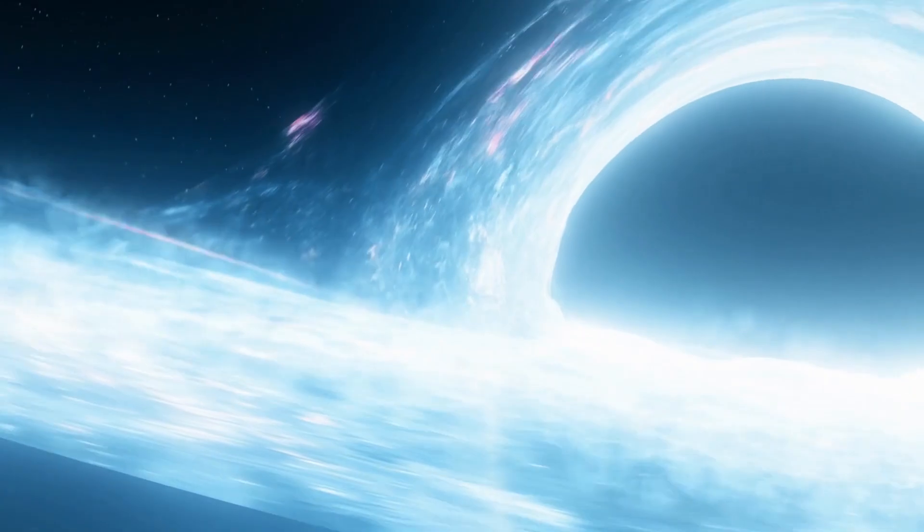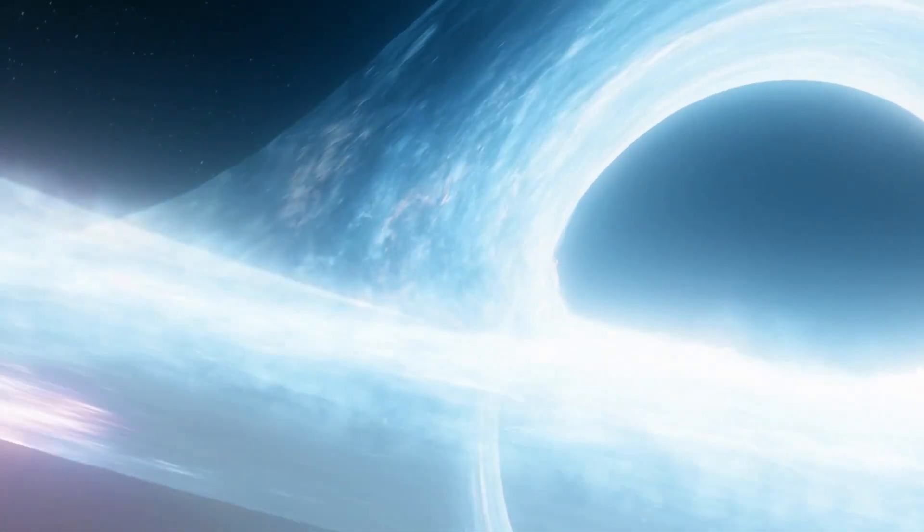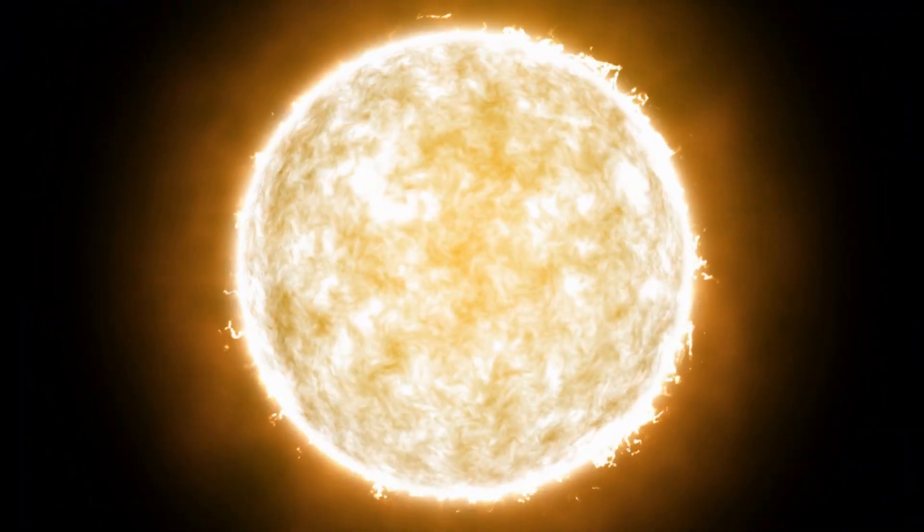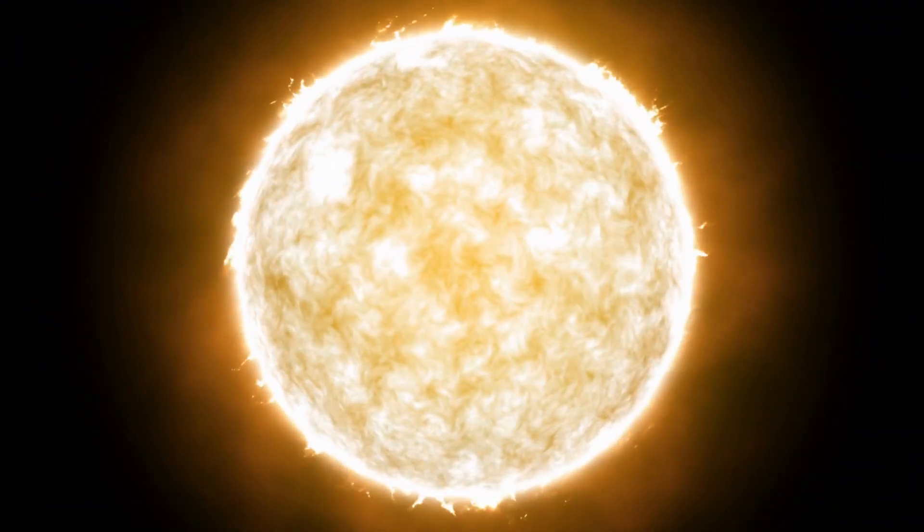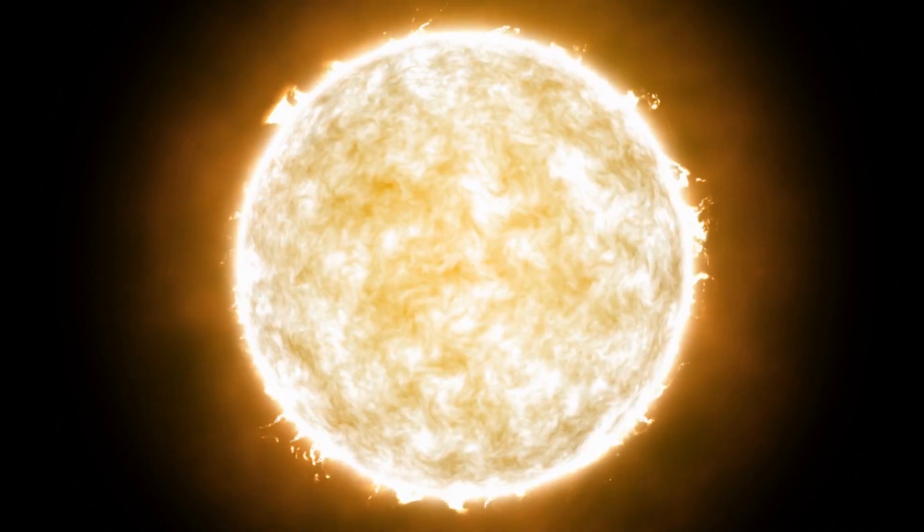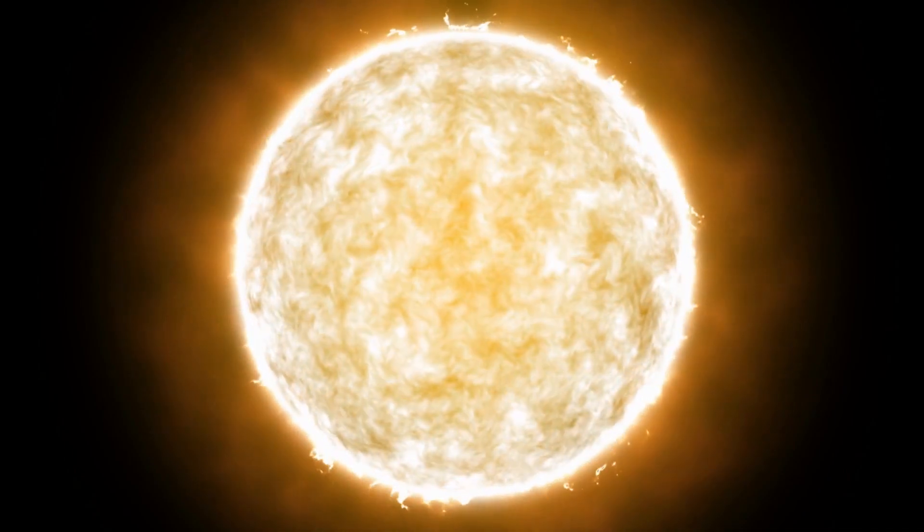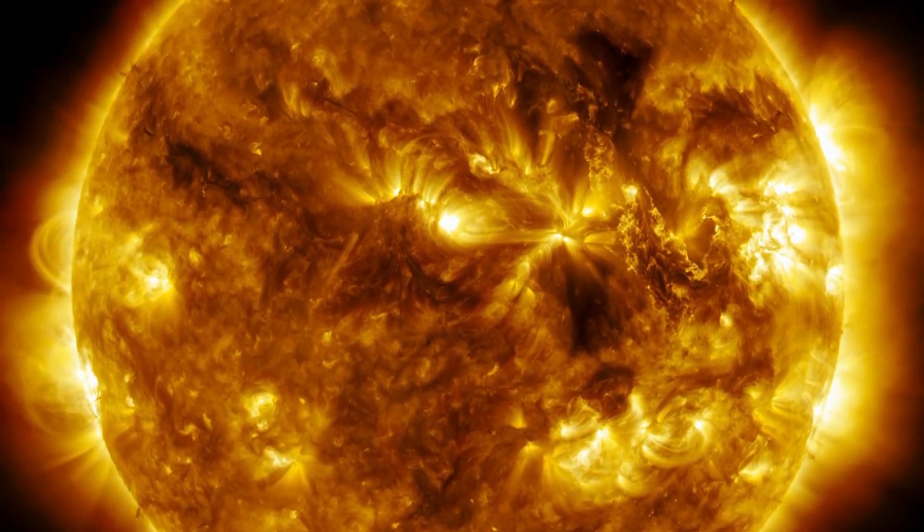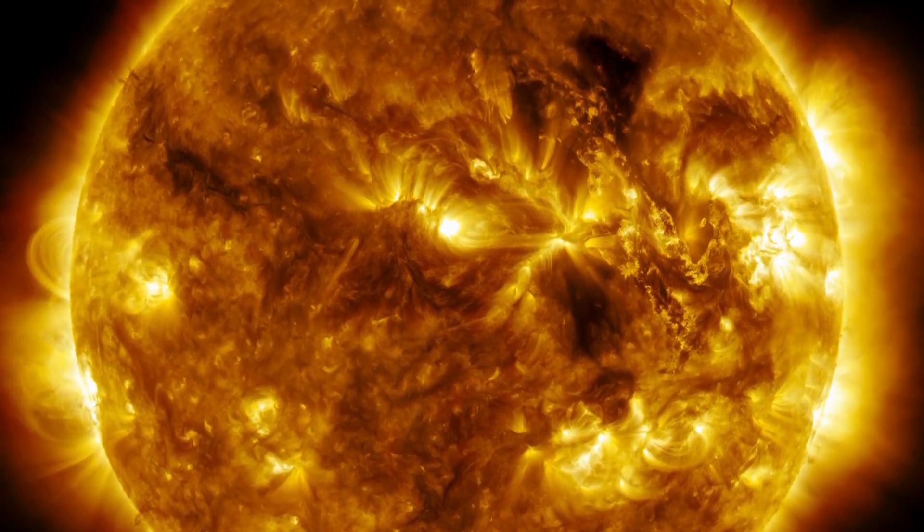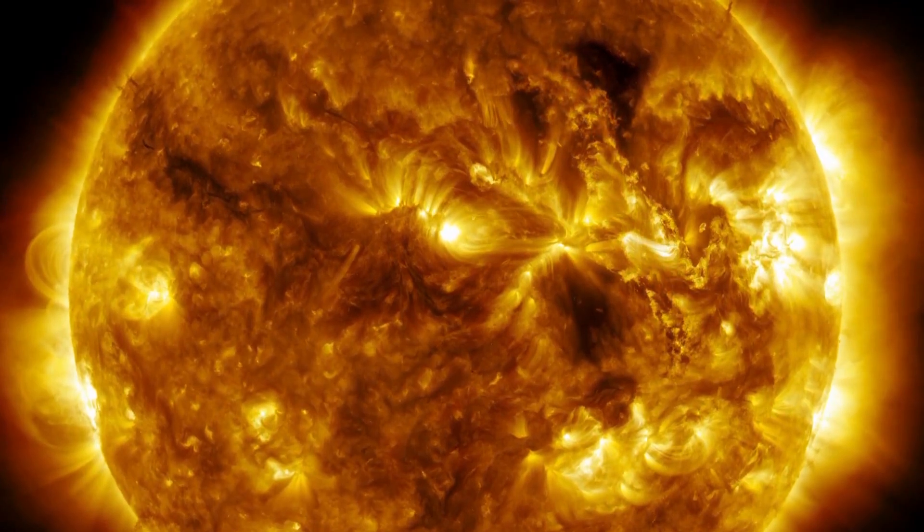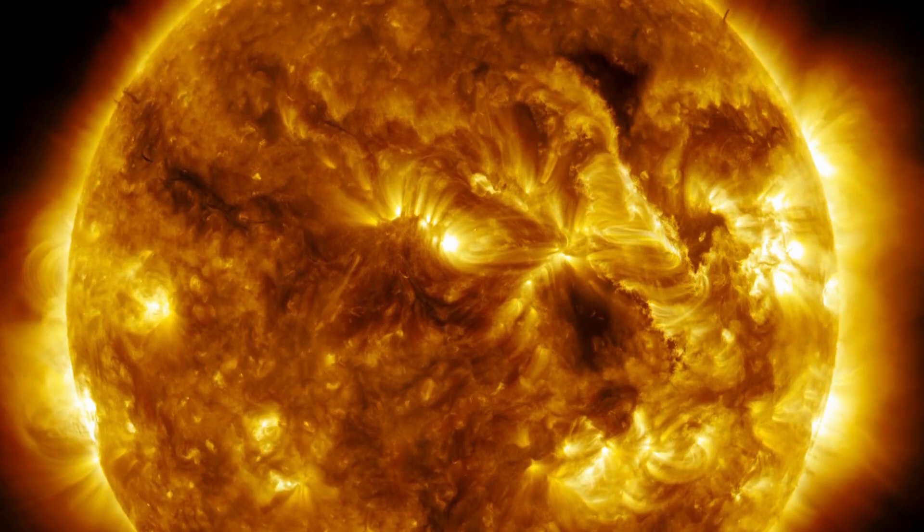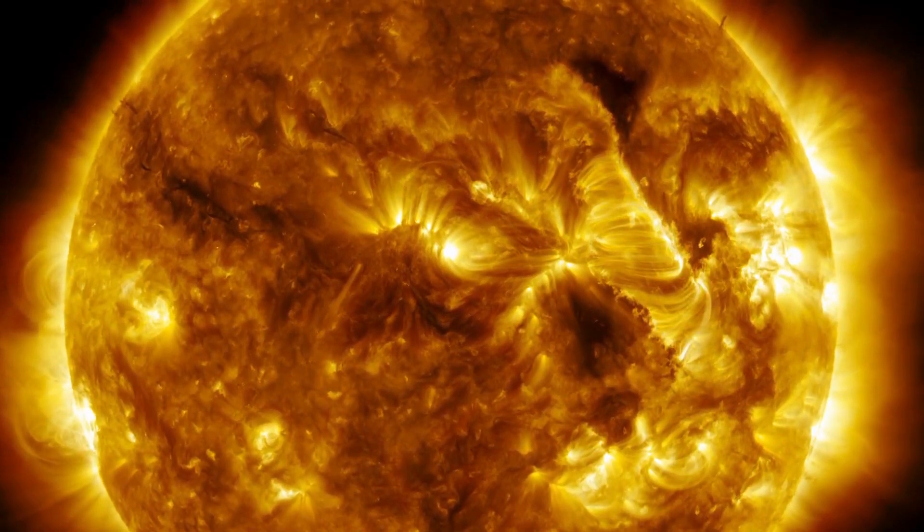To understand how black holes formed and what happens inside them, it is necessary to go back to the life cycle of a massive star. These massive stars are true cosmic powerhouses fueled by the incredible nuclear fusion reactions that take place in their cores. The sun's energy source comes from the fusion of hydrogen and helium. During this process, two hydrogen atoms combine in a collision and form a helium atom. As long as the star has enough hydrogen to carry out the fusion, it can maintain its brightness.